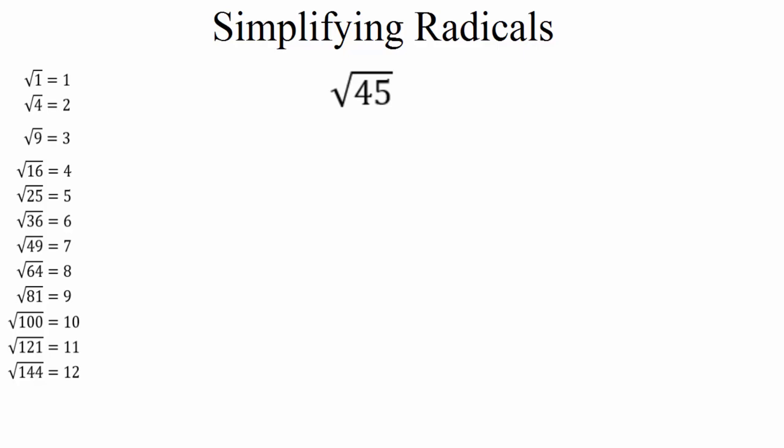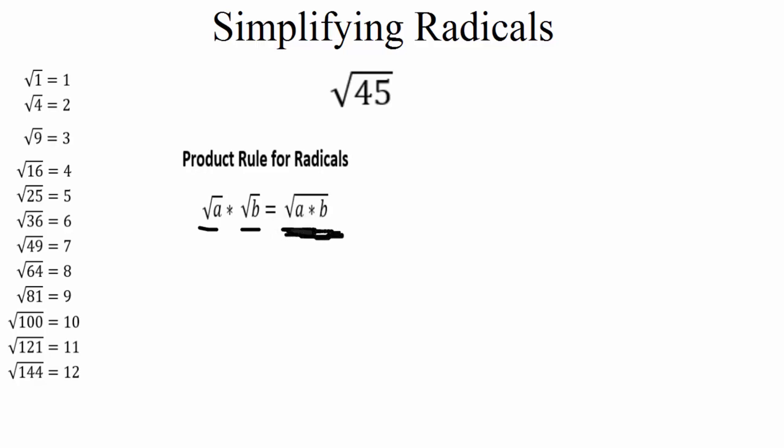In order to simplify radicals, there are a couple of rules that may apply. The first one is the product rule for radicals. The product rule essentially says that when multiplying two radicals together, we can join them all underneath one radical symbol. Or the rule works in reverse, where we can have a factored radical and break that apart into two separate ones.